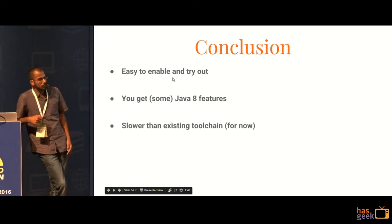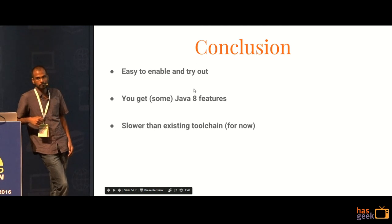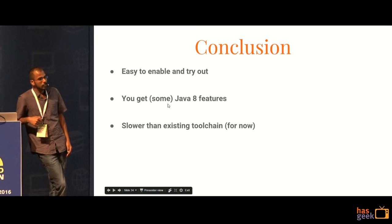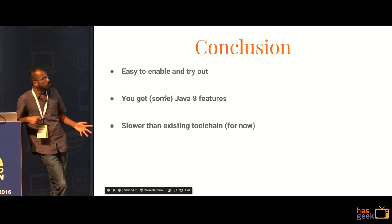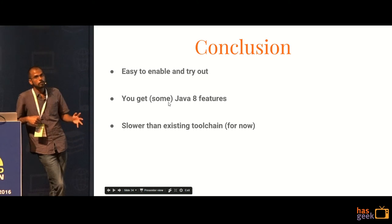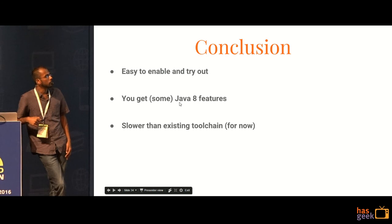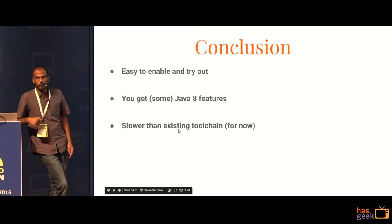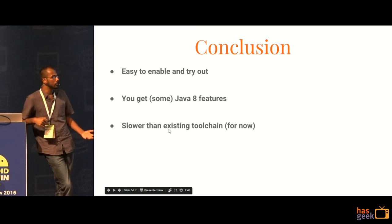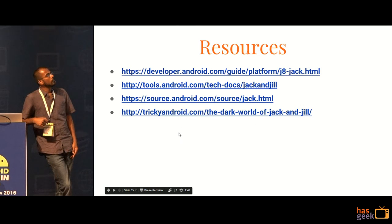In conclusion, it is very easy to enable and try out — you can do it in a couple of minutes. You get some Java 8 features if you are at minimum SDK less than 23, which is Marshmallow or below. You get a lot more Java 8 features if you are at SDK 24 or above. For now, it is slower than the existing toolchain. However, Google says that they are working on it, so hopefully that will change. There are a few resources here that you might want to check out. Thank you.